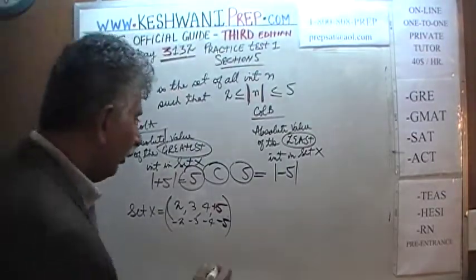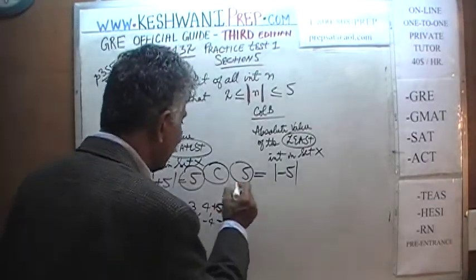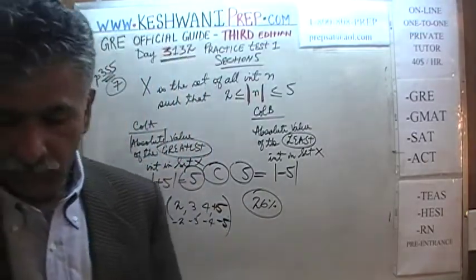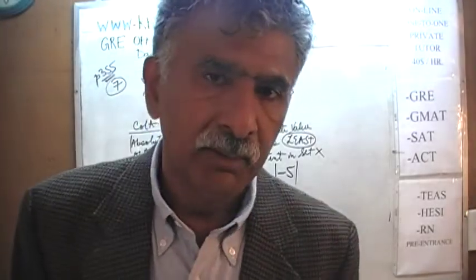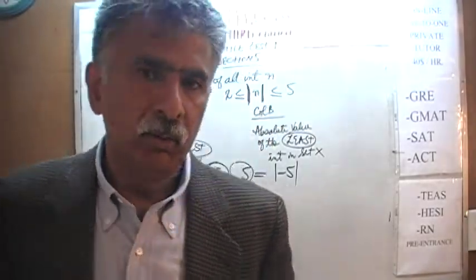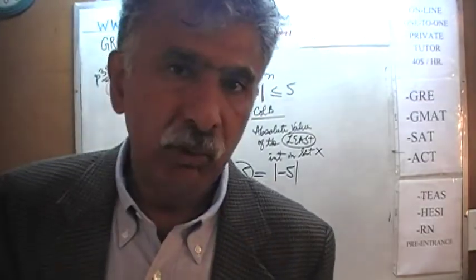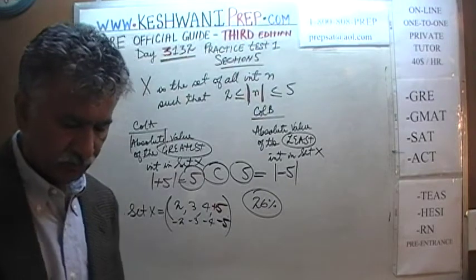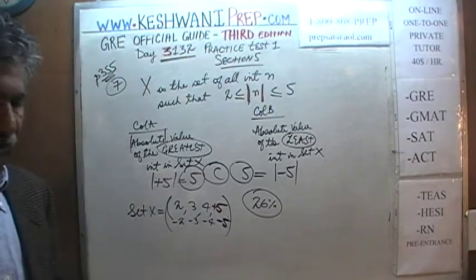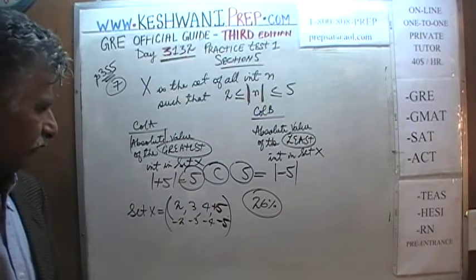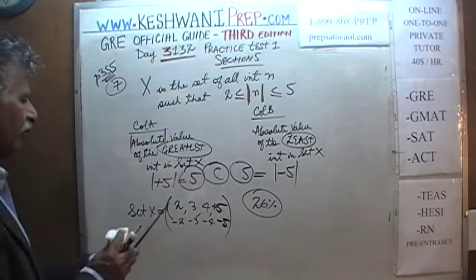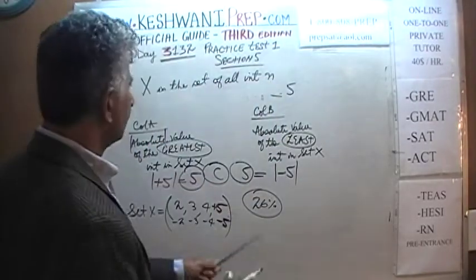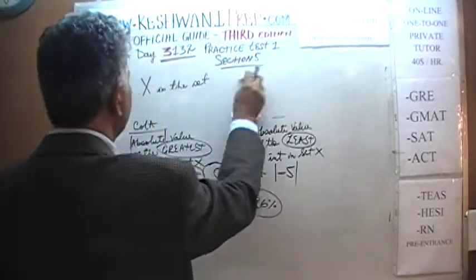Unfortunately, only about one quarter of the people — when this question appeared in the real exam — managed to get this right. Almost three quarters of the people missed it. You have to think rationally and cover your bases. The answer is C, at the 26th percentile.